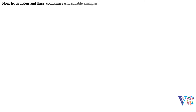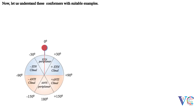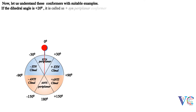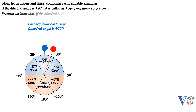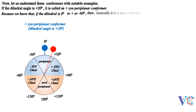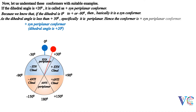Now let us understand these conformers with suitable examples. If the dihedral angle is plus 20 degrees, then it is called plus syn-periplanar conformer, because we know that if the dihedral angle is 0 degrees to plus or minus 90 degrees, it is basically a syn conformer. As the dihedral angle is less than plus 30 degrees, specifically it is periplanar. Hence the conformer is plus syn-periplanar conformer.